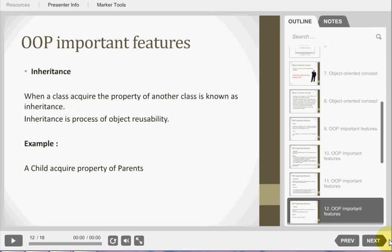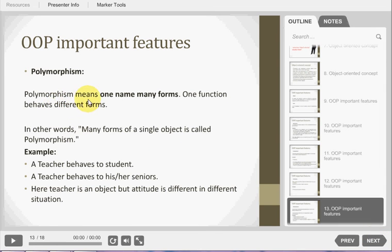Next one is polymorphism. Polymorphism means one name many forms means one function behaves like different forms. In other words we can say that many forms of single object is called as polymorphism. We consider here one example to explain polymorphism. A teacher behaves with student, that is one type of behavior. A teacher behaves with senior, that is another type of behavior. Here teacher is an object but attitude is different with different conditions or different situations.